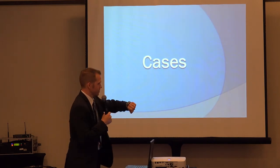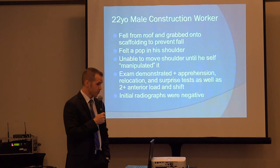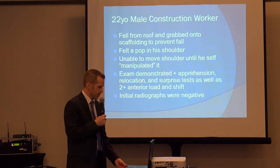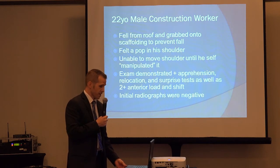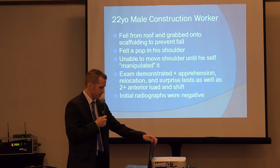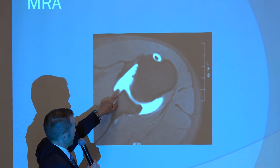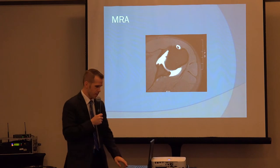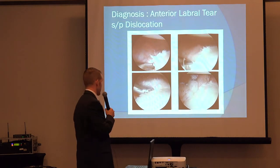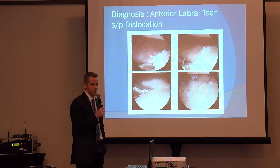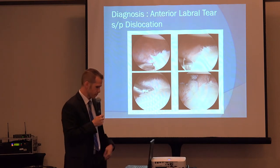First case: a 22-year-old male construction worker who fell from a roof, grabbed onto scaffolding to prevent his fall, felt a pop, and was unable to move his shoulder until he self-manipulated it. His exam demonstrated a positive apprehension and relocation test, a positive surprise test, and a 2-plus anterior load and shift. Initial radiographs were negative, but based on his exam and the probability of dislocation, an MR arthrogram was obtained. The MRA showed the posterior labrum intact but the anterior labrum off the anterior aspect of the glenoid — an anterior labral tear. Since he was 22, very active, and desired surgical intervention, he underwent a labral repair and was back to full duty in four months.